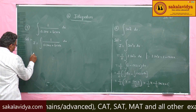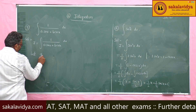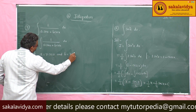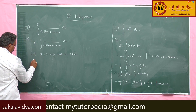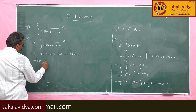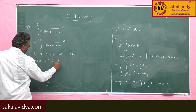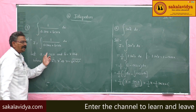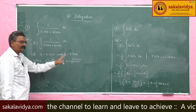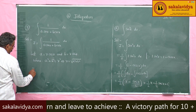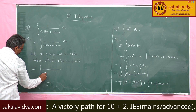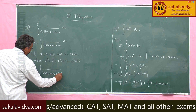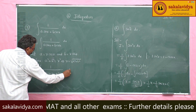Let A = R cos θ and B = R sin θ. Then A² + B² = R², which implies R = √(A² + B²) — that is the elimination of θ from these two equations. So this becomes the integral of 1 by (R cos θ · sin x + R sin θ · cos x) dx.